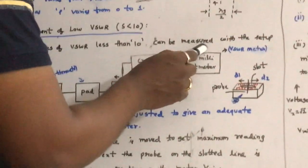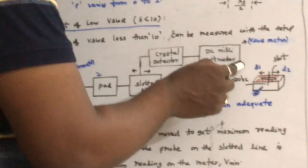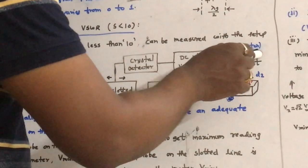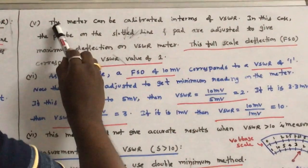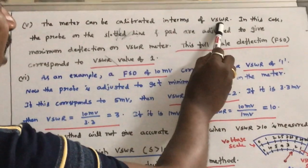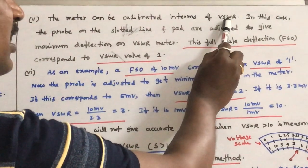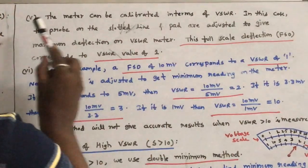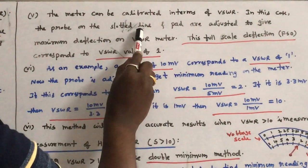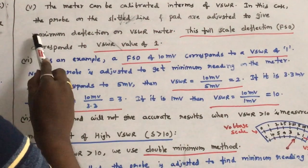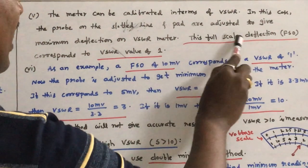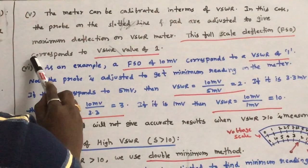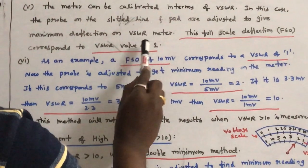Instead of a DC millivoltmeter in the lab, we can also use a VSWR meter. The meter can be calibrated in terms of VSWR. If the VSWR meter is used, the probe on the slotted line and the pad are adjusted to give full scale deflection (FSD) on the VSWR meter. This full scale deflection corresponds to a VSWR value of 1.